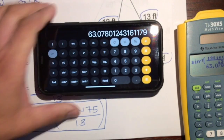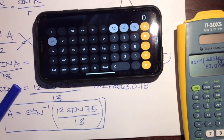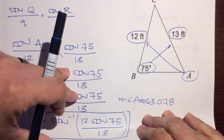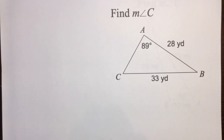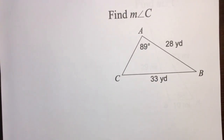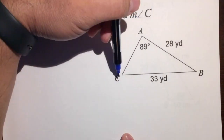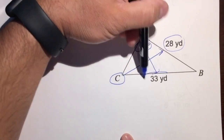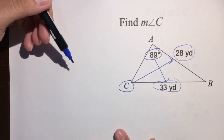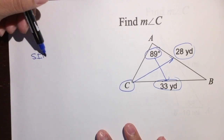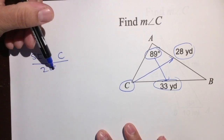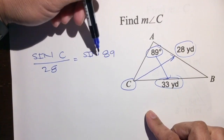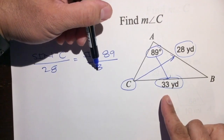Let's do another problem using the law of sines to find a missing angle. This time, find the measure of angle C. Let's verify we can use the law of sines: we're trying to find angle C, we have its opposite side, we have 89 degrees, and we have its opposite side. So: sine of C over 28 equals sine of 89 degrees over its opposite side, which is 33.